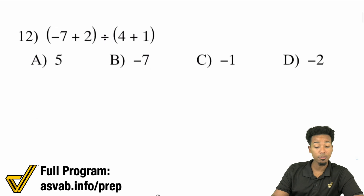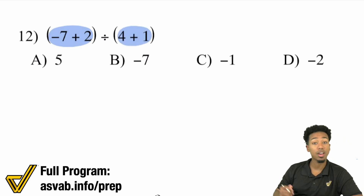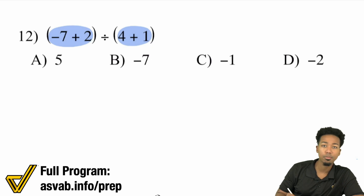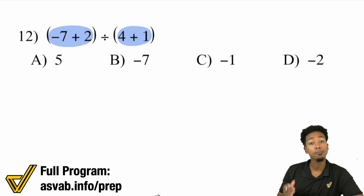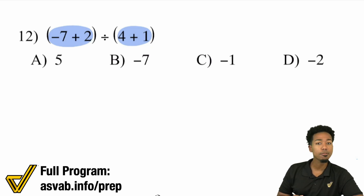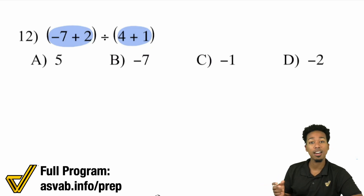We have negative seven plus two, divided by four plus one. We're going to take care of our parentheses and then divide those results. Negative seven plus two — a negative plus a positive is the same as subtracting those numbers and keeping the sign of the bigger number. Seven minus two is five, but it'll be negative five because that seven was bigger and negative.